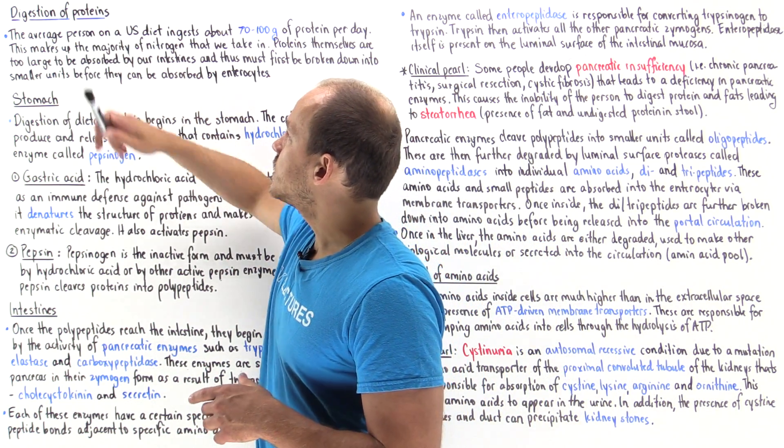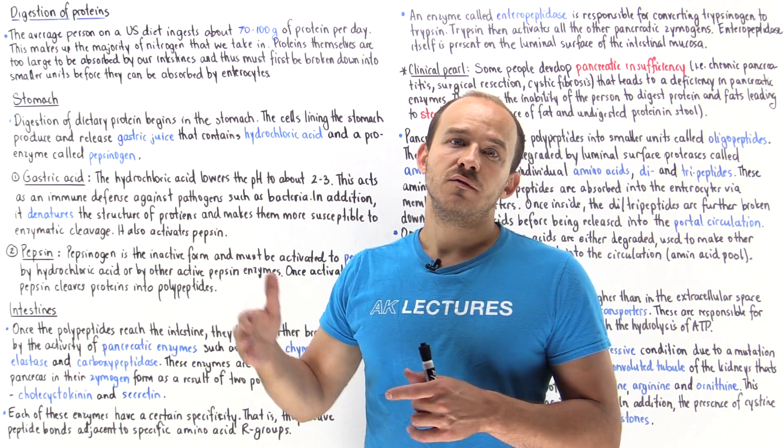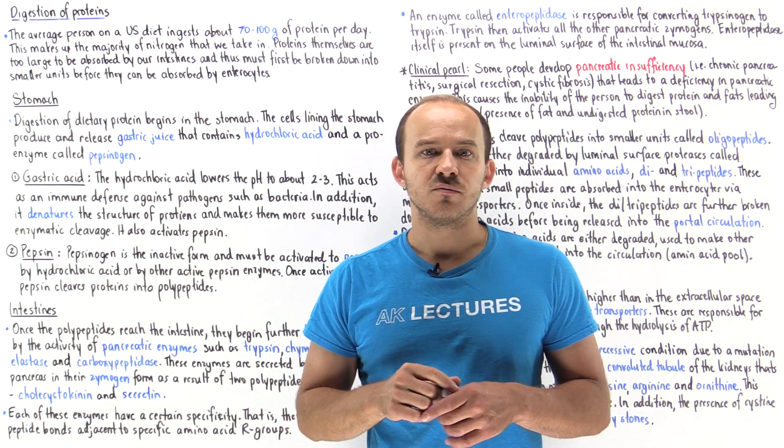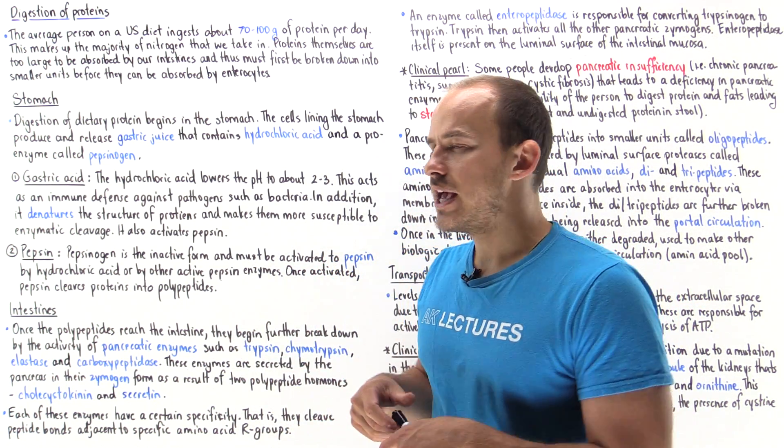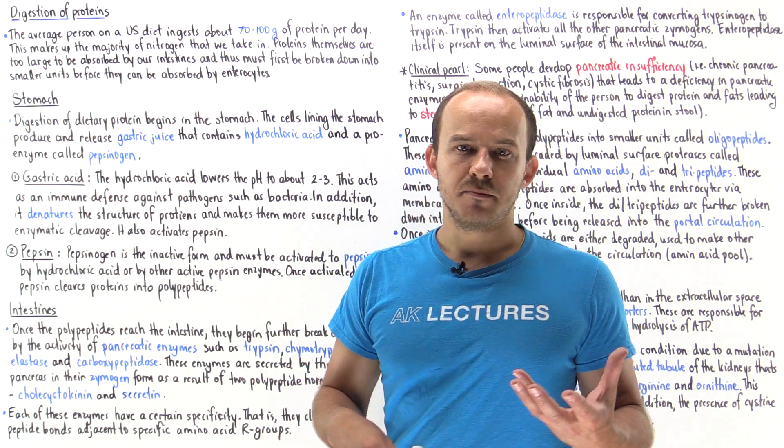On average, a person on a US diet ingests anywhere from 70 to 100 grams of protein every single day, and this makes up the majority of the nitrogen that we actually take in on a daily basis.